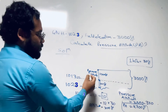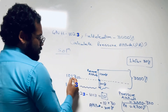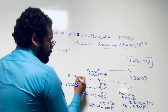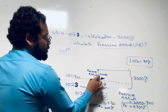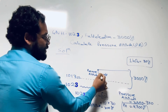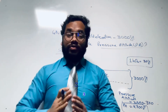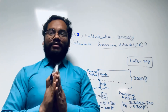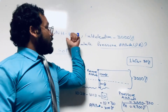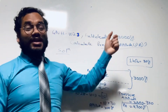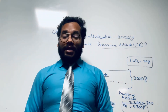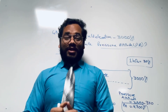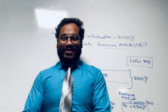So the pressure altitude, which is measured from the standard pressure level of 1013.25 hectopascals, is 2700 feet in this case. I hope it is clear how to calculate the pressure altitude when given a QNH and field elevation. We will come up again with a new topic in the next session. Till then, enjoy learning and stay tuned. Thank you.